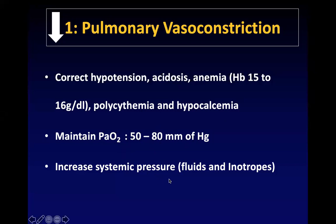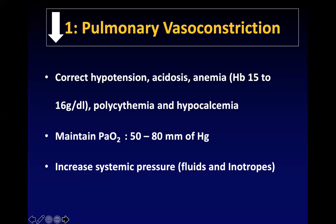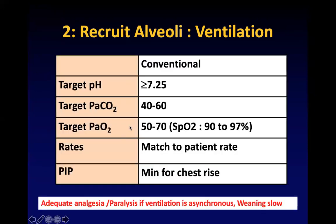Continue correcting hypotension by giving fluids and inotropes, correcting acidosis, severe anemia, and polycythemia. Maintain PaO2 between 50 to 80 mmHg. Try to increase systemic pressure — if MAP is less than 40 in term babies, increase MAP to at least 40 or 45 to increase systemic vascular resistance and decrease right-to-left shunting. The first step is to correct reflex vasoconstriction by correcting temperature, sugar, calcium, magnesium, fluids, acid-base, anemia, polycythemia, and using vasopressors to increase systemic vascular resistance if blood pressure is borderline or low.